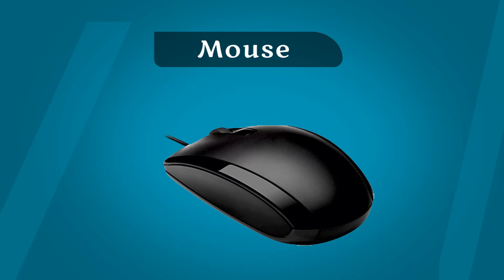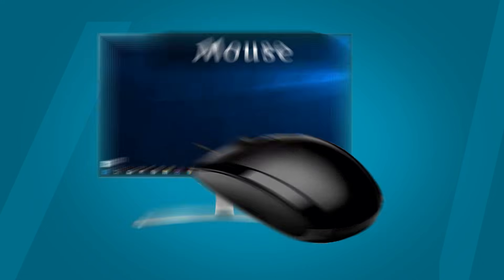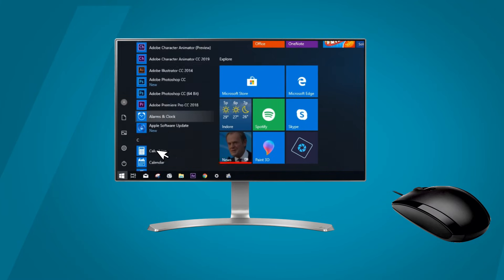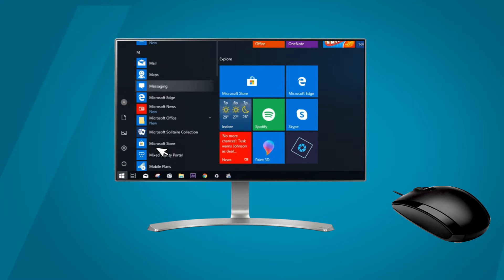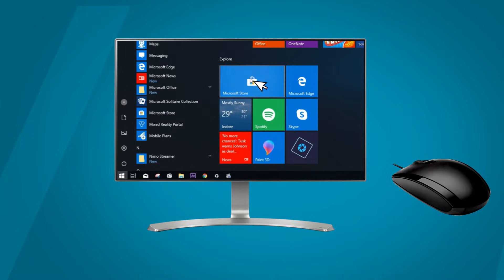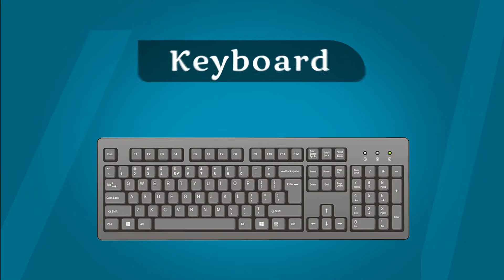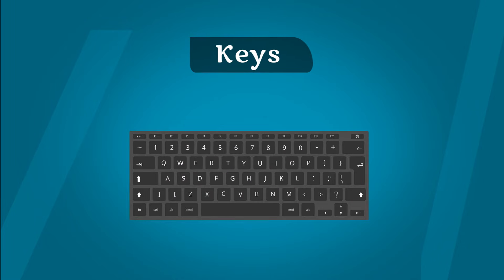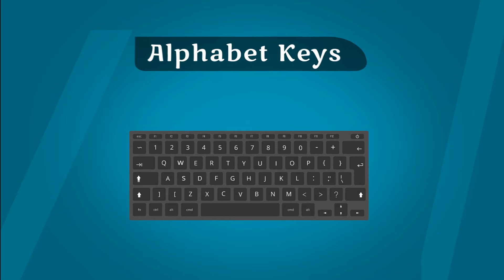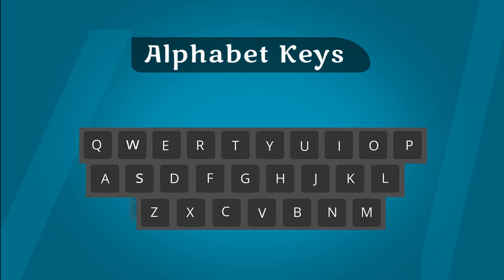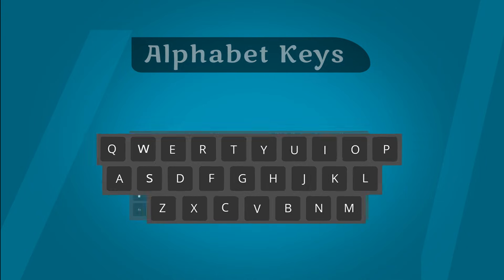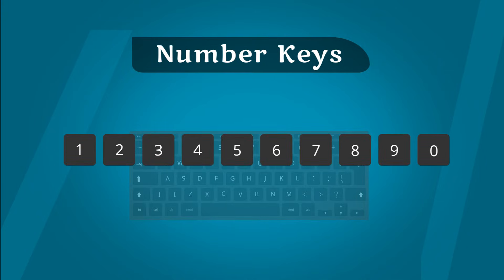The devices which are used to give input to the computer are called input devices. An example of an input device is the keyboard. Keyboard is a primary input device. It is used to type numbers and characters. Pressing the keys on a keyboard is called typing.